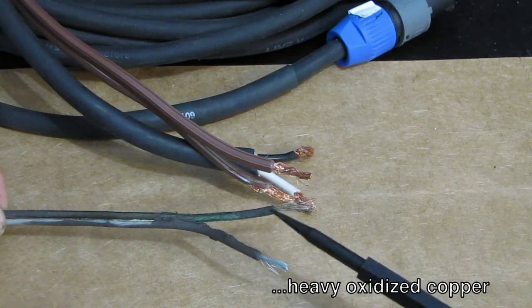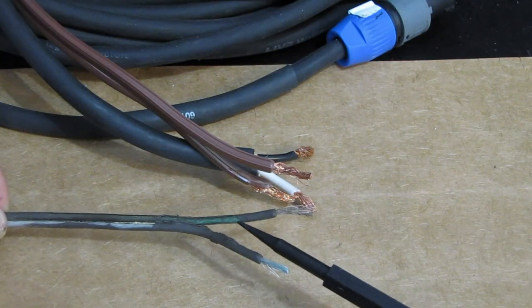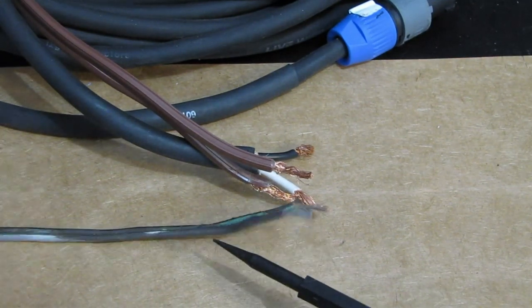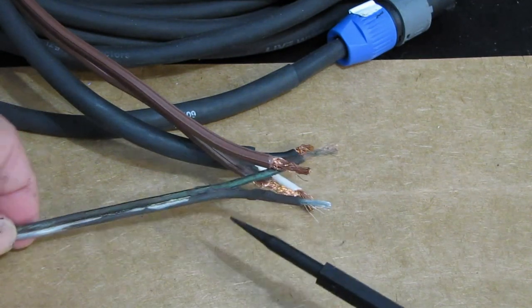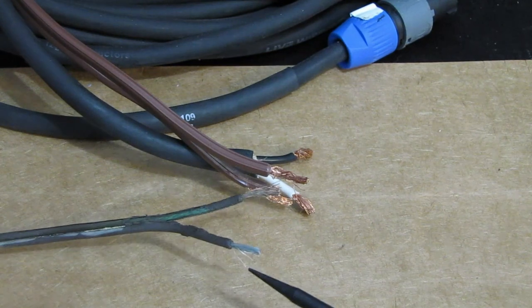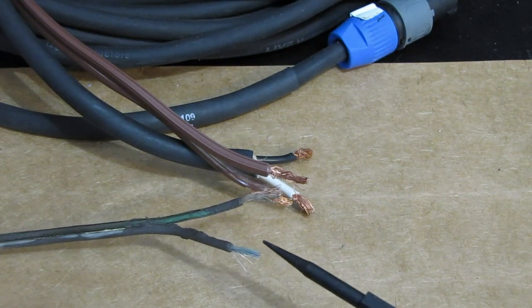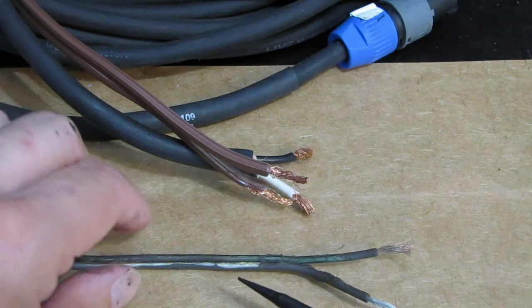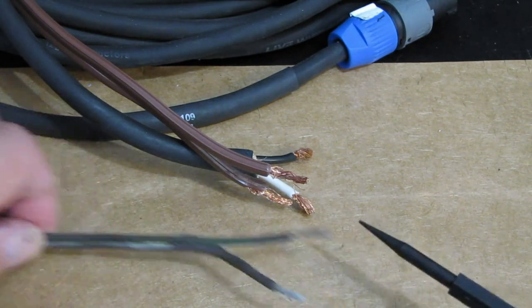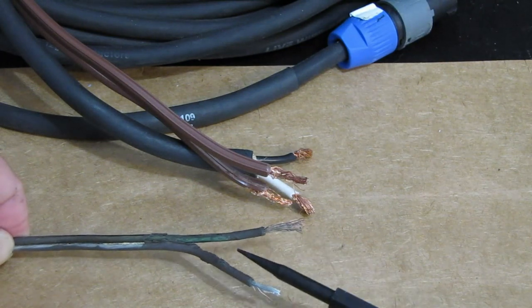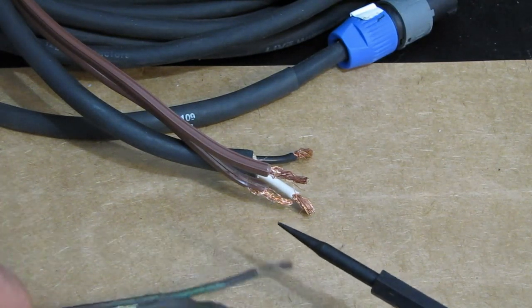This is oxidation that has leached its way into the jacketing of the cable and is basically ruining this whole little speaker wire here. This side here is aluminum, which does real well, but it's not a very good conductor of electricity. I mean, it works, but it's not that good. Copper is the best. But this is all oxidation. So how does this happen?